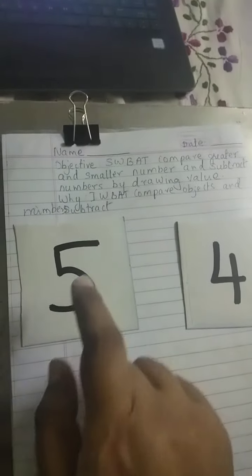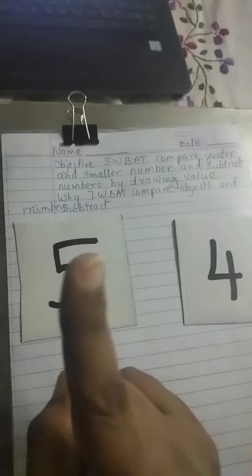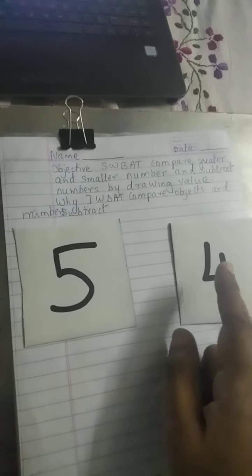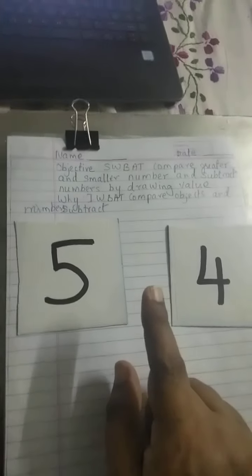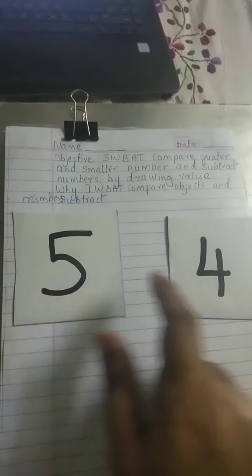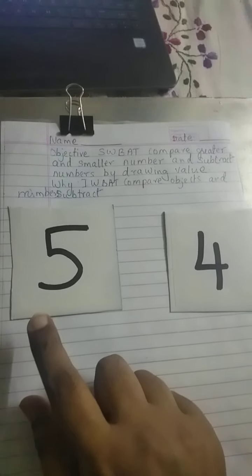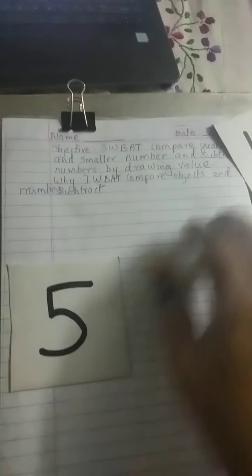Subtraction के लिए हमेशा जो left side में first number होता है वो big होना चाहिए. और जो second number होता है वो small. क्यूंकि हम big number से small number minus कर सकते हैं. लेकिन small number से big number नहीं minus कर सकते हैं.